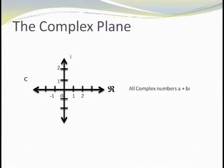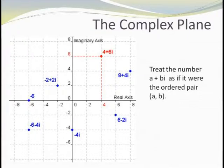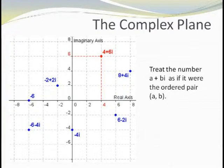This time, however, every point on the plane will correspond to some complex number, and every complex number will correspond to some point. The trick here is to treat complex number a plus bi the same way we do the ordered pair (a, b). That is, the first component will be the real portion, and the second component will be the coefficient of i. So, for instance, the point corresponding to 4 plus 6i will be the same point we use to graph the ordered pair (4, 6). You can see that there is a one-to-one matchup between all the points on the plane and the set of complex numbers.